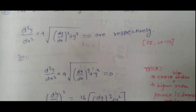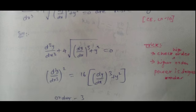d³y/dx³ plus 4 root of (dy/dx)³ power 3 plus y² equal to 0. Squaring: (d³y/dx³)² equal to 16 times (dy/dx)³ plus y². Check the higher order first — higher order is 3, so order is 3. The higher order power gives the degree, so d³y/dx³ has power 2, and degree is 2.